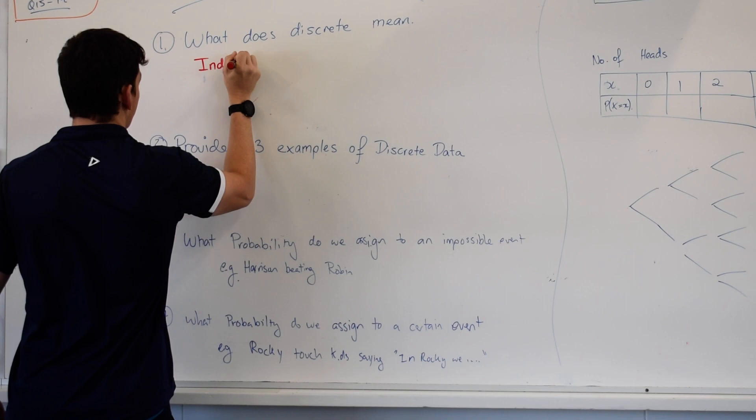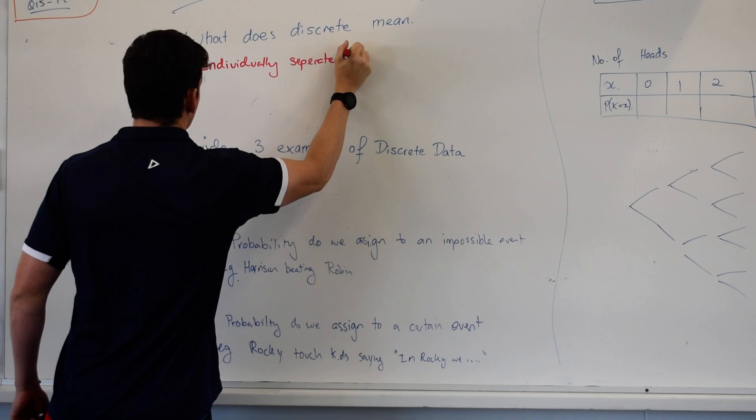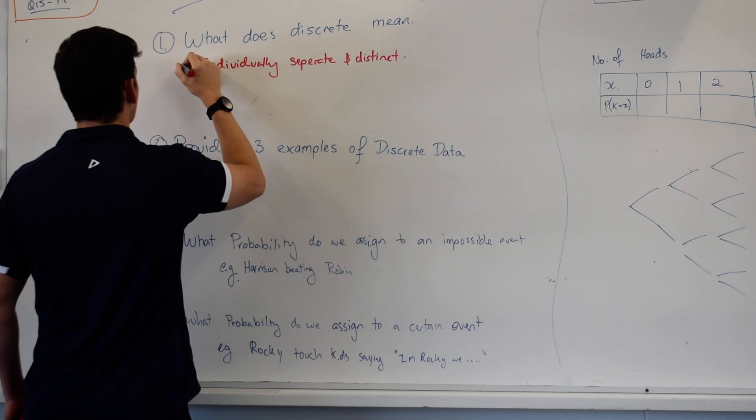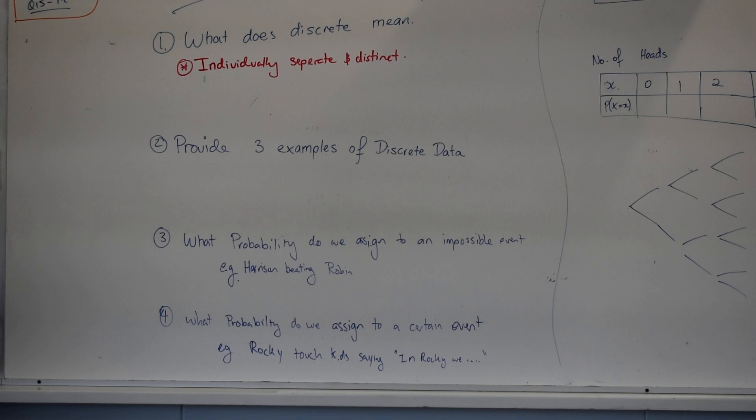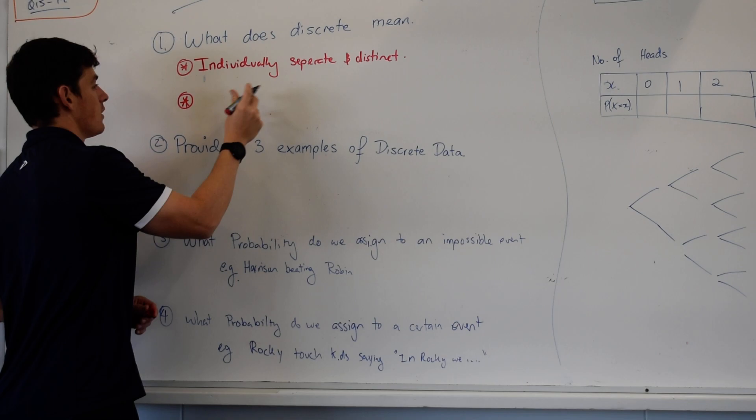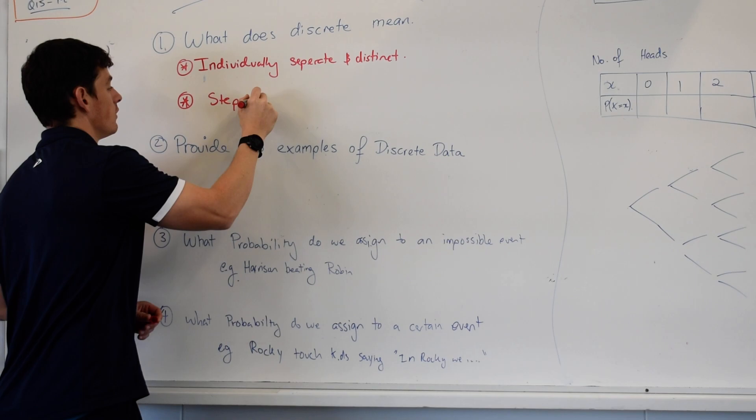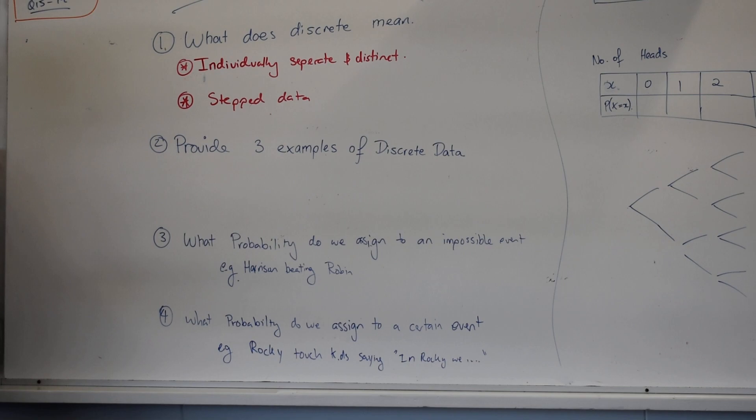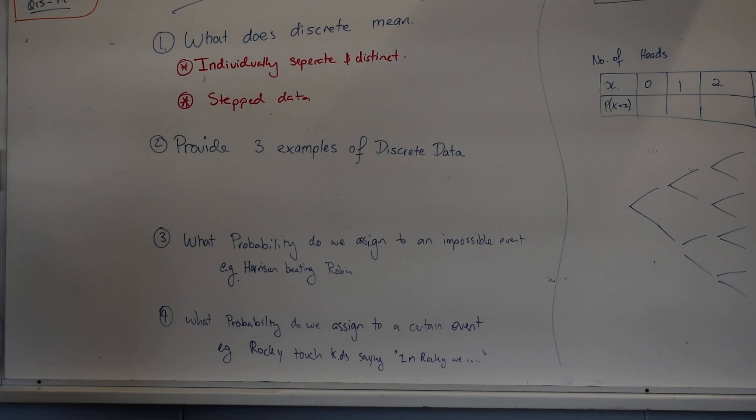Very good, anything different? Not continuous. So it can't be any number. I like to think of it as the same thing. Individually stepped data. The data that has individual steps or levels or clear jumps between.